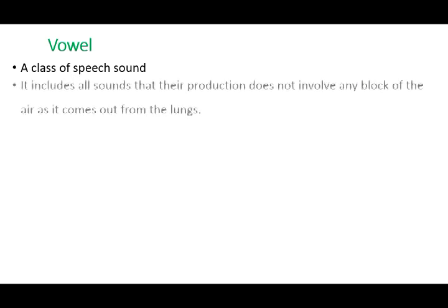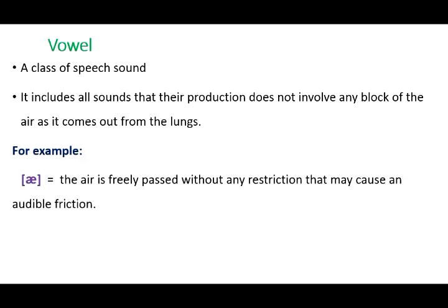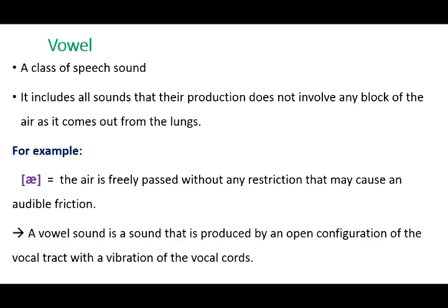A vowel is a class of speech sounds that includes all sounds the production of which does not involve any block of the airstream as it comes out from the lungs. In other words, if you produce a vowel sound — let's say 'a' — you will notice that the air passes freely without any restriction that may cause an audible friction. A vowel sound is produced by an open configuration of the vocal tract with a vibration of the vocal cords, and that's why we mark all vowel sounds as voiced.